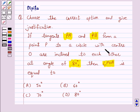If tangents PA and PB from a point P to a circle with center O are inclined to each other at angle of 80 degrees, then angle POA is equal to: